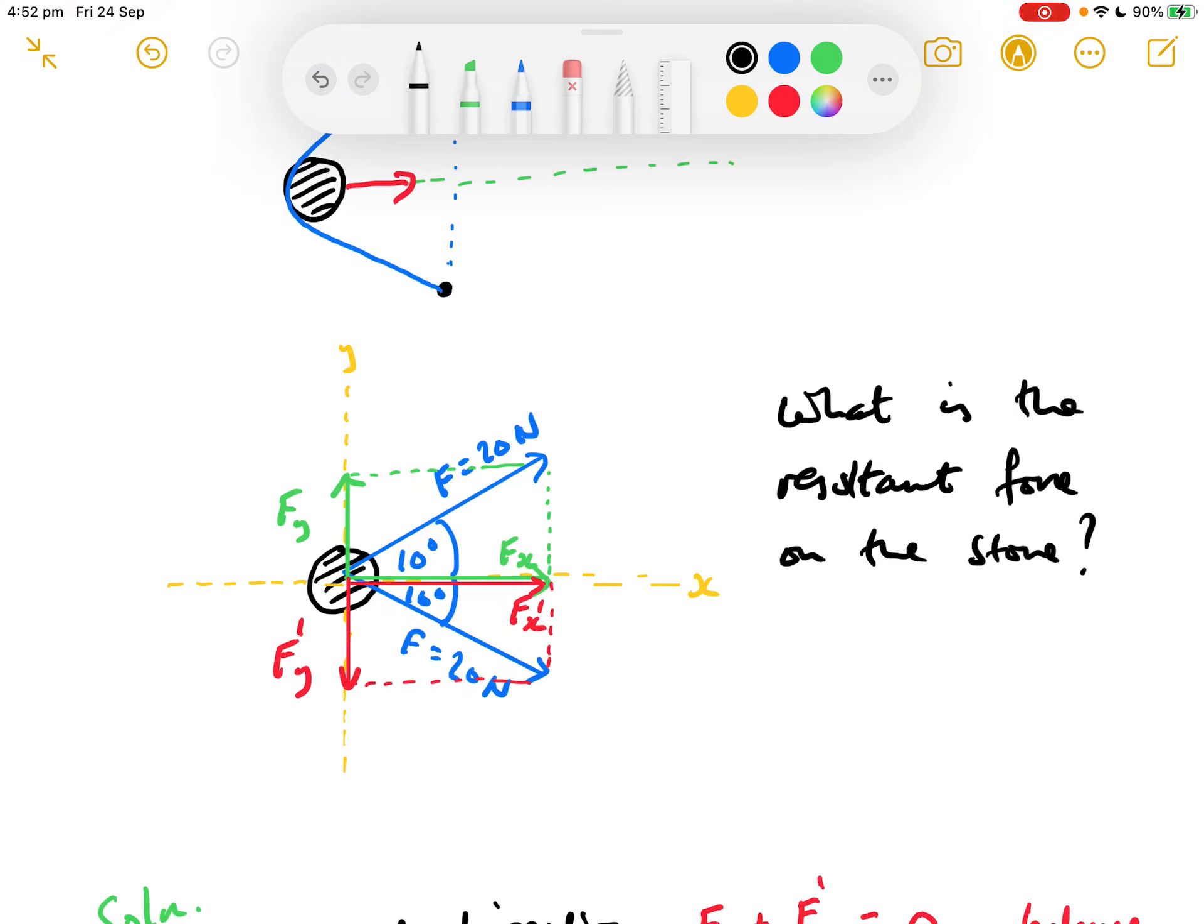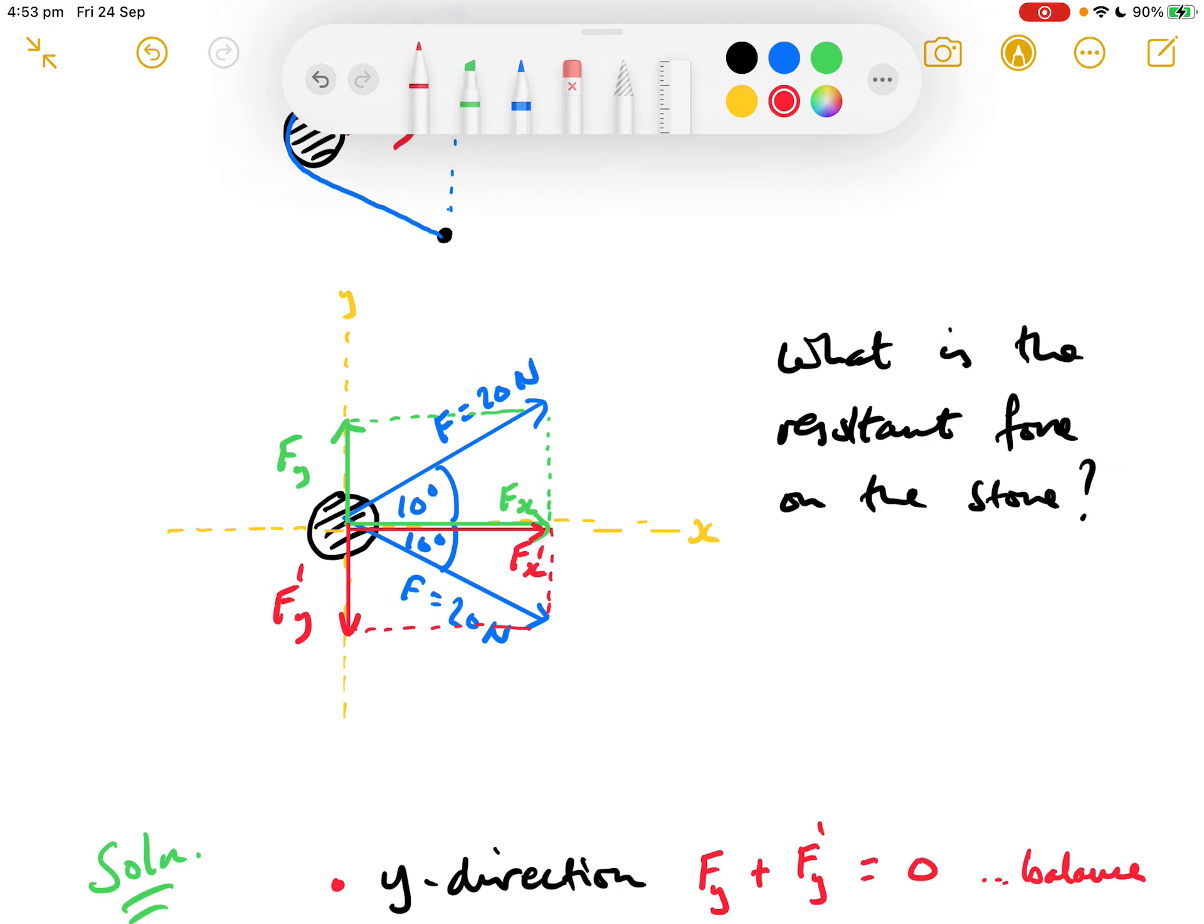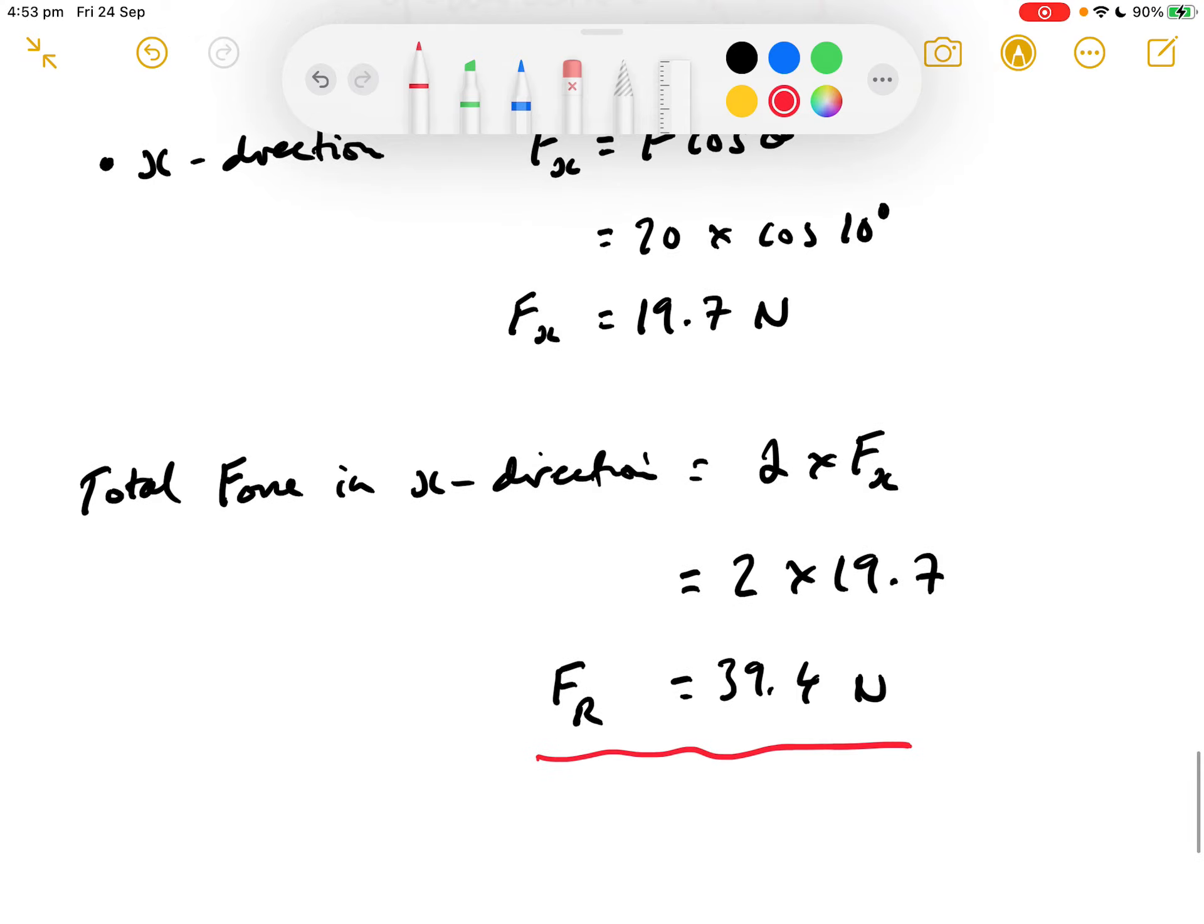The total force in the x-direction is 2 times Fx. Why is it 2? Because I've got the x-component of the upper blue force of 20 Newtons, but I've also got the x-component of the lower 20 Newton force. So I've got these two x-components. That gives me 2 times 19.7, which equals 39.4 Newtons. That's the resultant force on the stone. If you then knew the mass of the stone, you could use F equals ma to get your acceleration, because that is the unbalanced force on the stone. That's how you can resolve forces into their horizontal and vertical components.